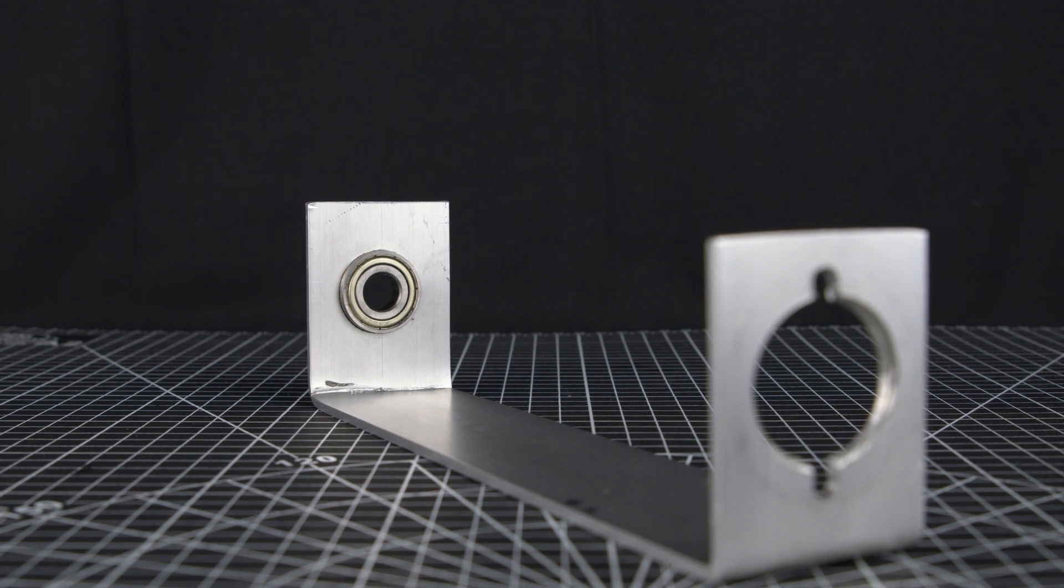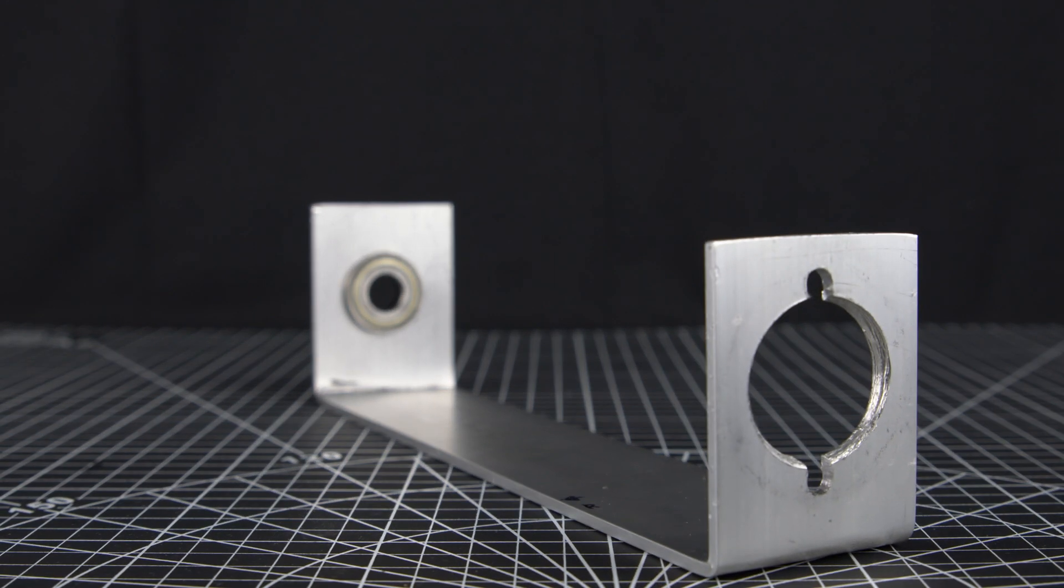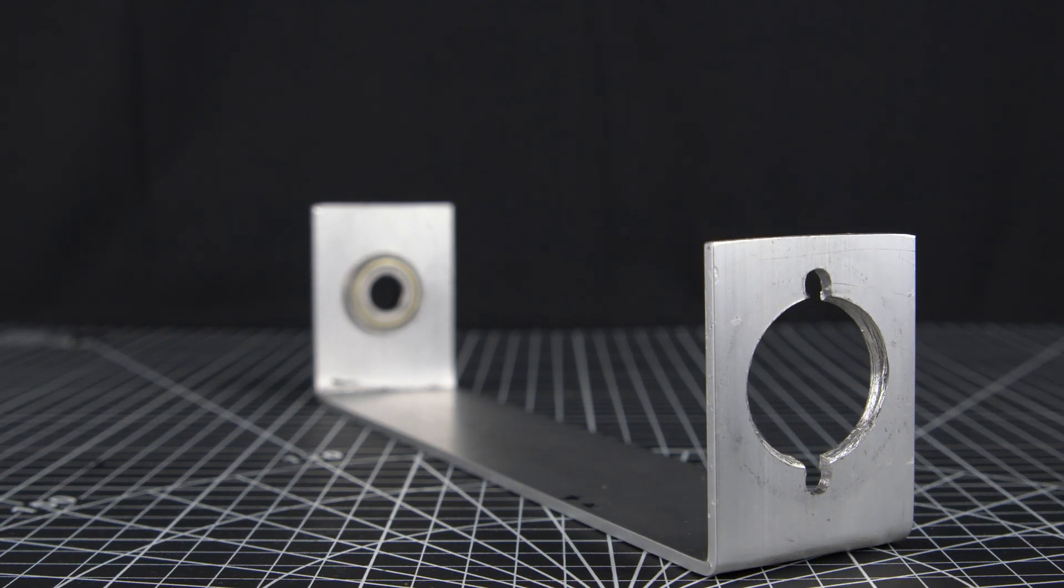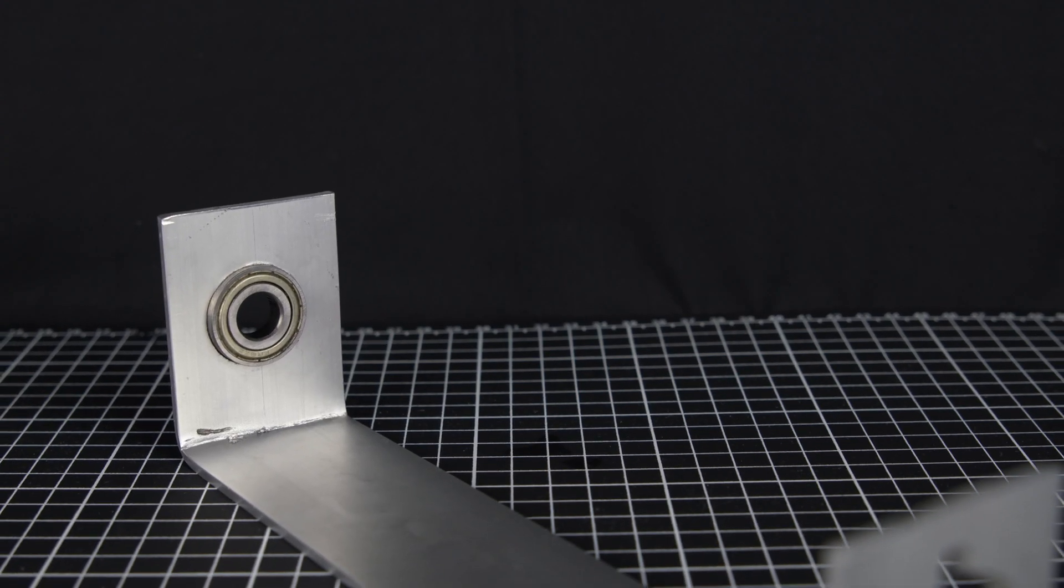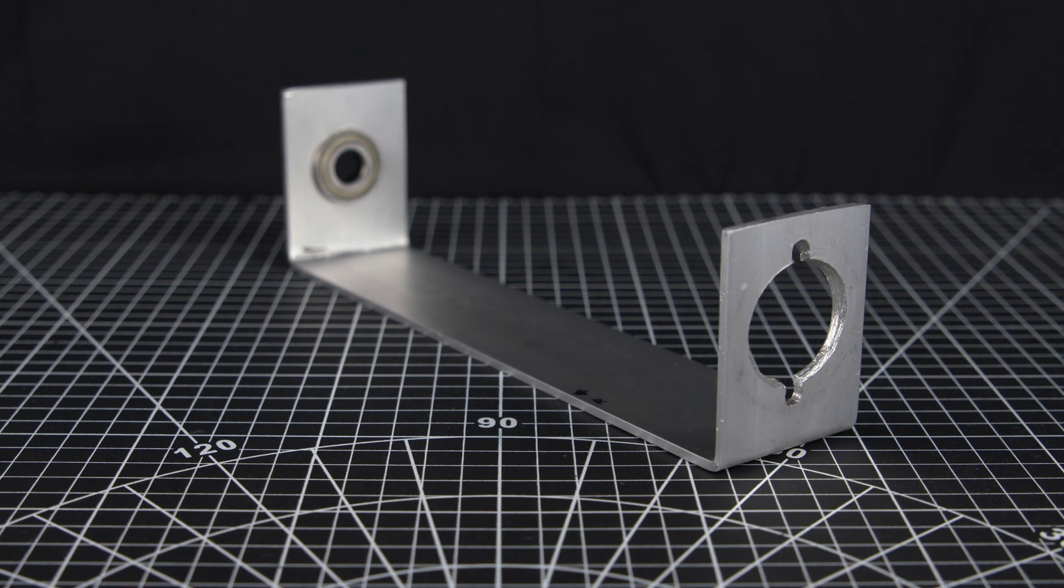The bearing is then pressed into place. On the other side, two small holes are drilled to mount a motor. Another large hole is drilled for clearance. These are made to be oversized so that the motor can be shifted to compensate for eccentricities.